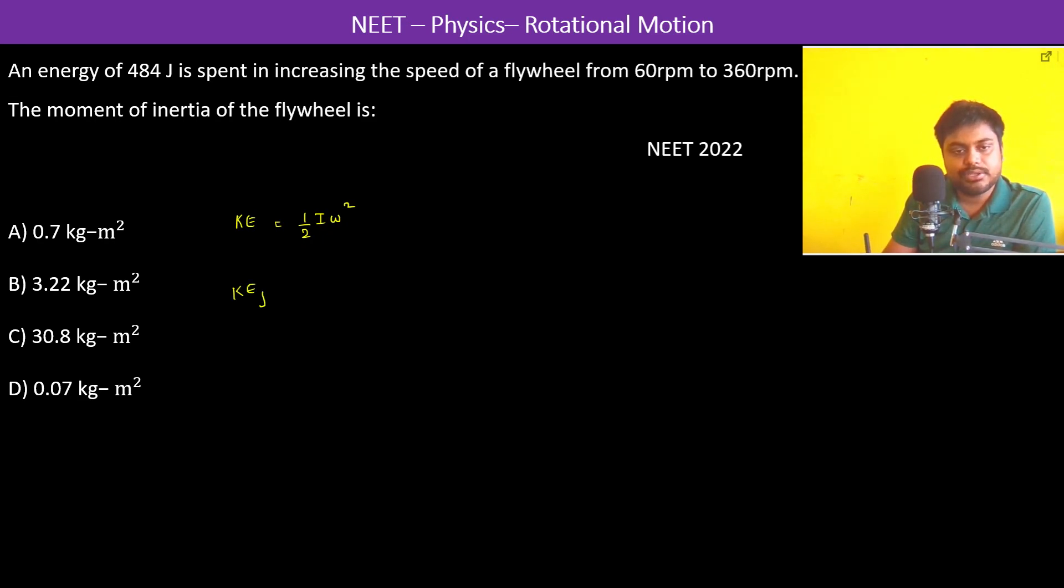Kinetic energy final minus kinetic energy initial is going to be 484 joules because that's how much energy is spent. So we have half into I into omega final square minus omega initial square is equal to 484 joules.